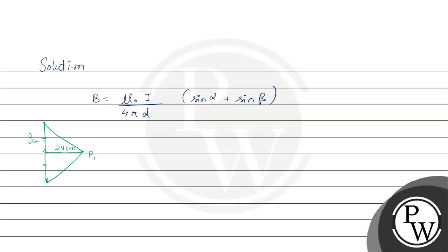Each side of the wire from the midpoint will be 9 centimeter each. Now we have a right angle triangle with sides 24 and 9, and we have to find this angle. So tan alpha equals tan beta equals 9 over 24, which equals 3 over 8. From here we can find sin alpha: sin alpha equals 3 upon square root of 64 plus 9, which equals 3 upon square root of 73.